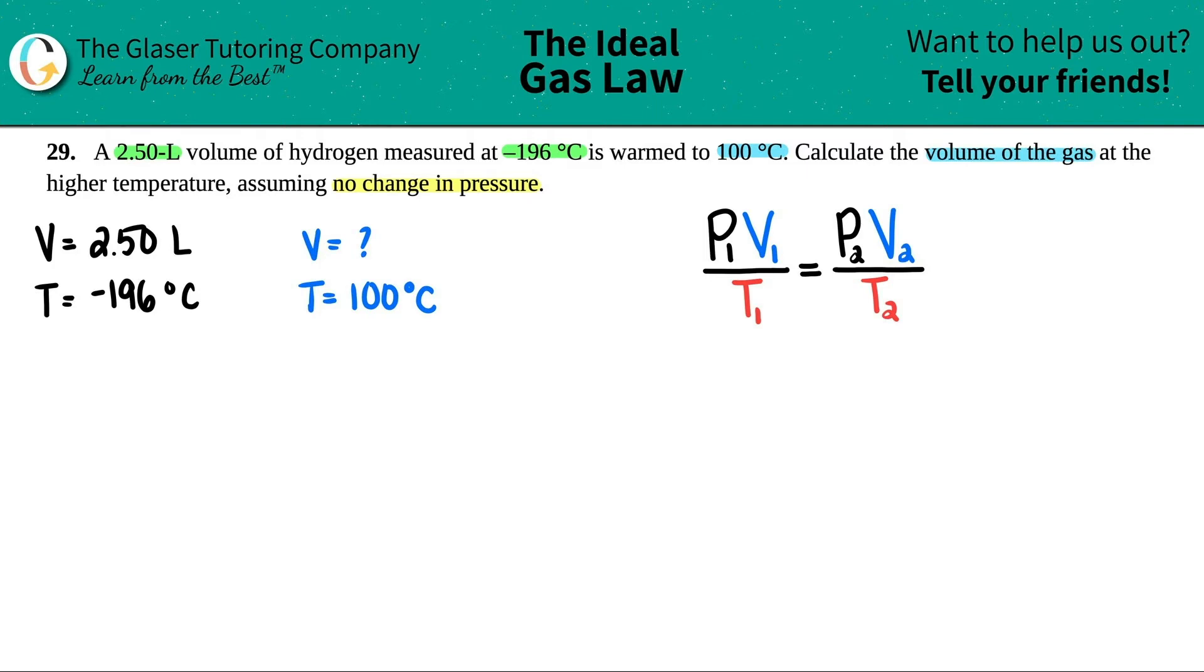Now they did say that there was no change in pressure and P stands for pressure. If there's no change, these numbers are not changing and there's no difference. So you know what that means. Get rid of it. There you go. And now we have an easier formula to work with. In this case, we're just doing V1 over T1 equals V2 over T2.